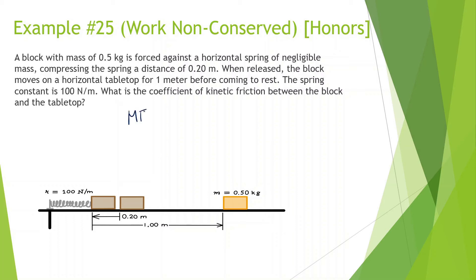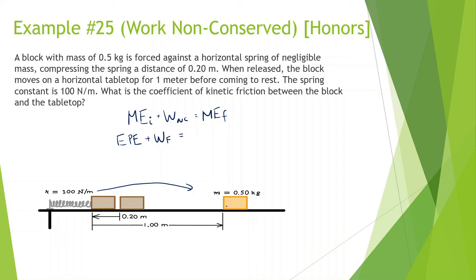Mechanical energy initial plus work non-conserved equals mechanical energy final. At the beginning, there's elastic potential energy from the compressed spring, no height so no gravitational PE, and no kinetic energy since it's not moving. As it travels, there's work done by friction. At the end, it's not moving so no kinetic energy, still on level ground so no gravitational PE, and no spring so no elastic PE. The right side is just zero.